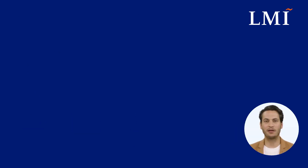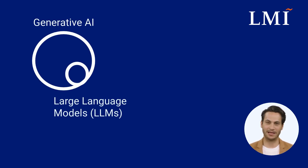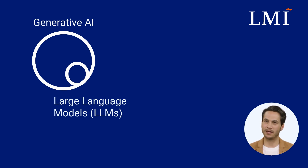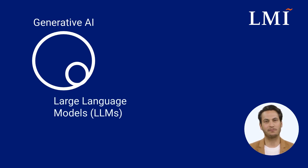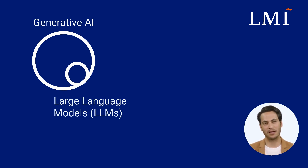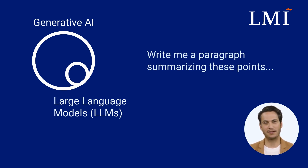A Large Language Model, or LLM, is a subset of Generative AI that focuses on generating text. ChatGPT and BARD are popular examples of LLMs. These models are trained on vast amounts of text data, such as books, articles, and web pages. They use complex algorithms to learn the structure, grammar, and vocabulary of a given language. They can then generate new text that is similar in style and tone to the original data, and even complete sentences and paragraphs based on a partial input from a user.